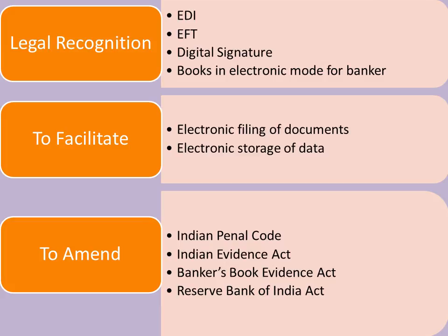The 3 points are: Legal Recognition, Facilitate, and To Amend. Under the first point, you need to write: Legal Recognition of EDI, Legal Recognition of EFT, Digital Signature, and Books in Electronic Mode for Bankers. To facilitate electronic filing and electronic storage of data.